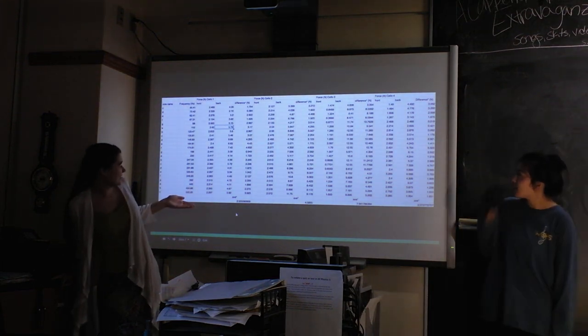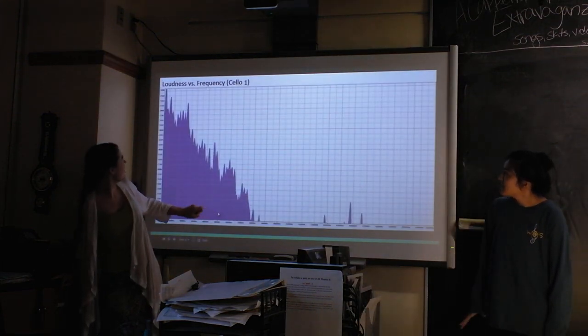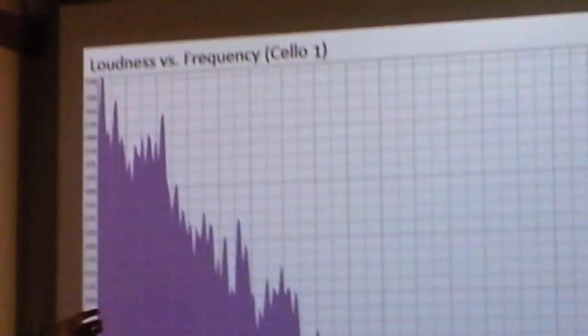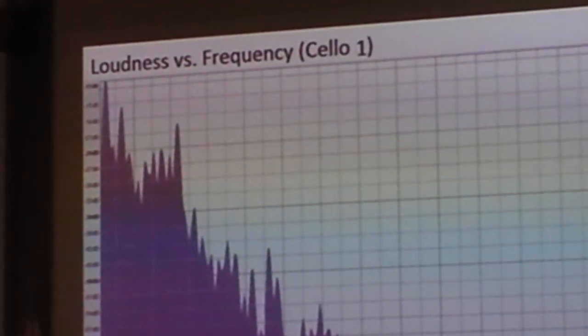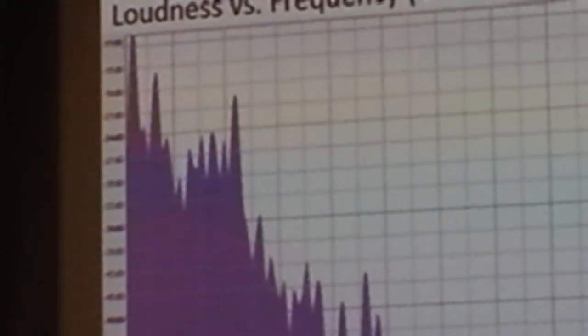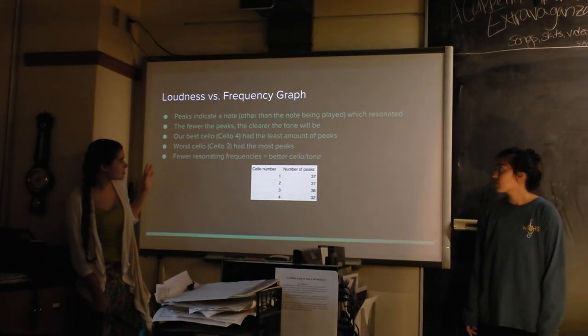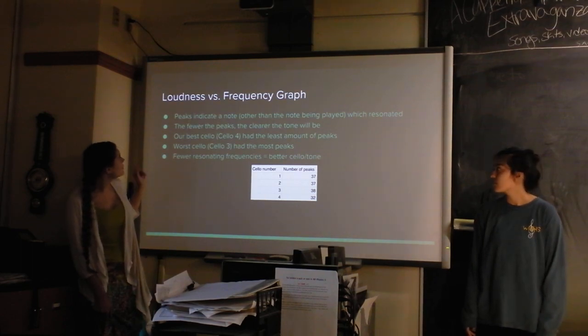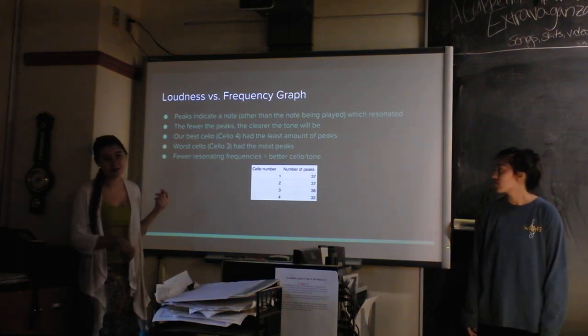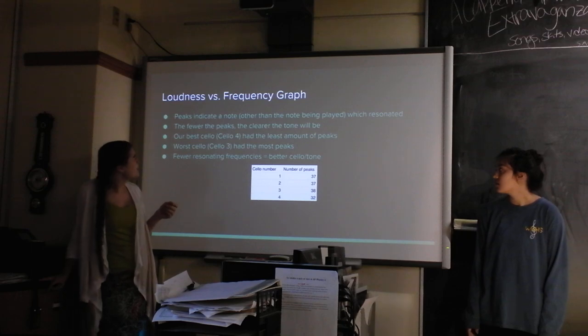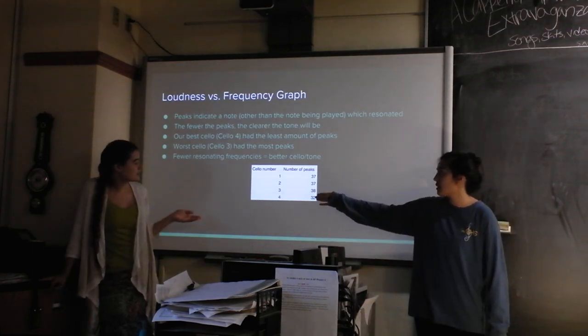It's a data table. Super exciting. This is the Audacity analysis. This is the open A string. I'm pretty sure that first peak is the note A, and then each of these peaks are the overtones that are present. Around here they're not really audible. The peaks indicate a note which resonated. The first peak is the note that actually resonated. The fewer the peaks, the clearer the tone will be, because there's less overtones that are clashing.